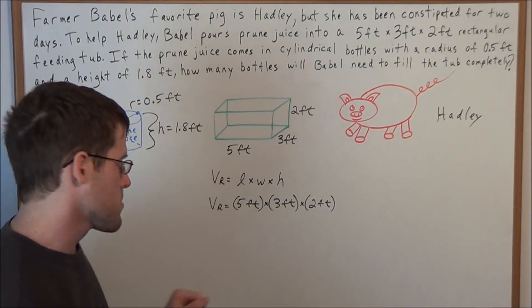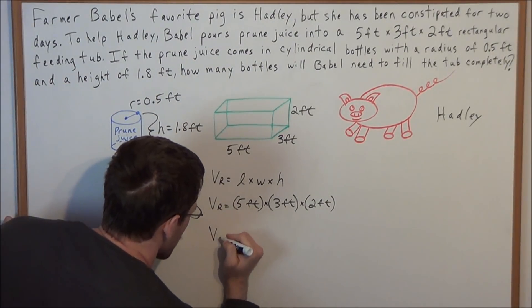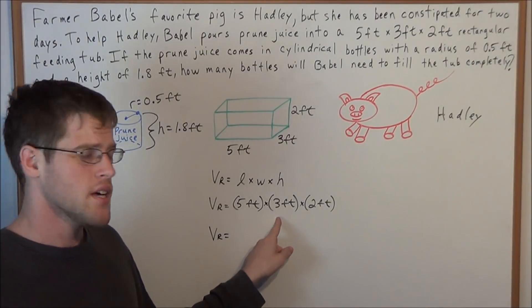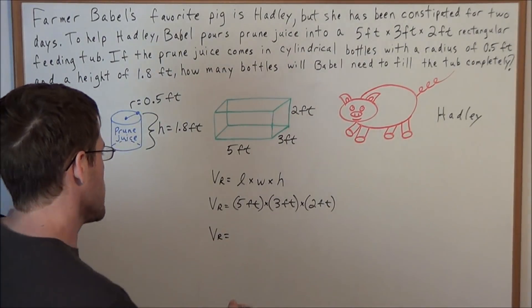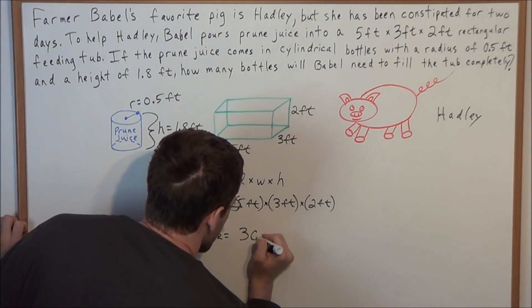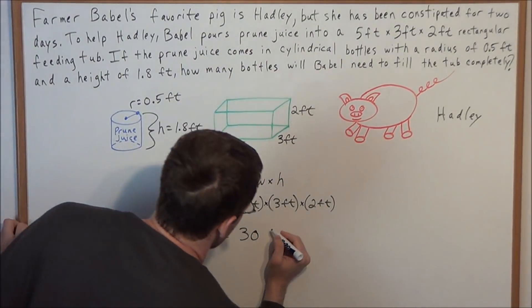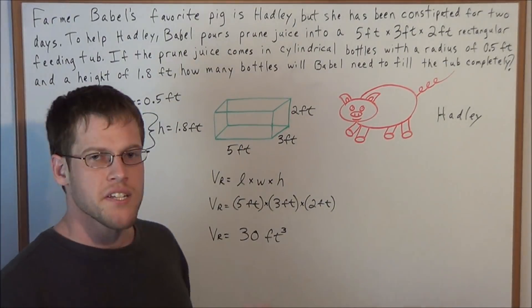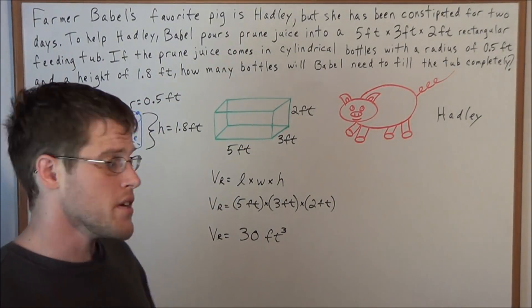So now once we multiply all this together, we have that the volume of the rectangular feeding tub, we have 5 times 3 is 15, 15 times 2 is 30, so we have 30, and now feet times feet times feet is feet to the third power. So now we would say that the volume of the rectangular feeding tub is 30 cubic feet.